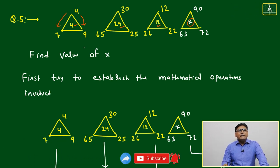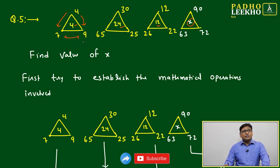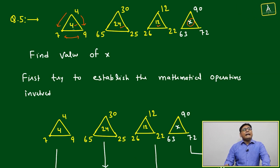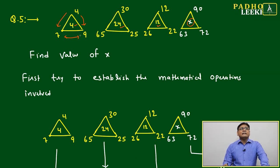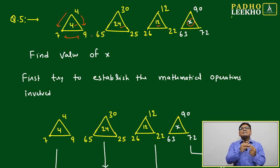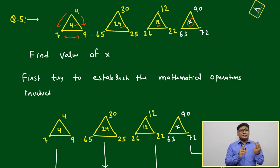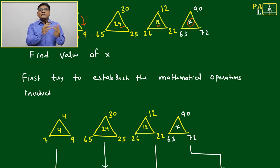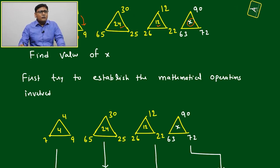If related to multiplication, it would become a big number, so it must also involve division. Two options: either multiplication and division, or addition and division—not subtraction—because here we have two-digit numbers.